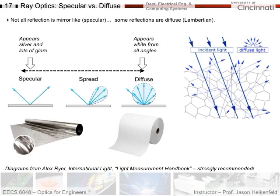Not all reflection is mirror-like, which is referred to as specular. Some reflections are diffuse, referred to as Lambertian. For specular reflection, the angle of incidence and reflection are the same. As the surface gets rougher, you start to see different angles. For diffuse reflection, light is reflected in all directions — like a piece of paper, where light comes in and encounters different wood fibers surrounded by air, producing Fresnel reflections and refractions that scatter light in all directions.